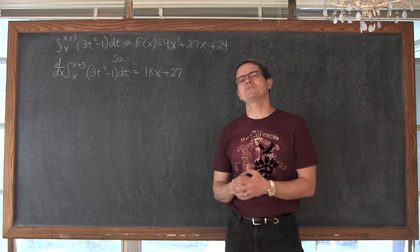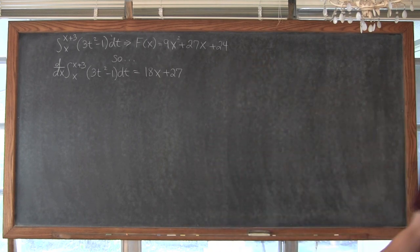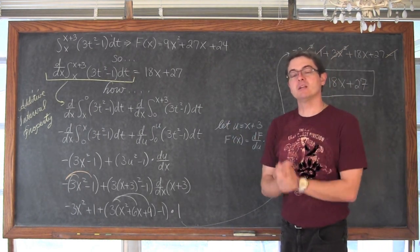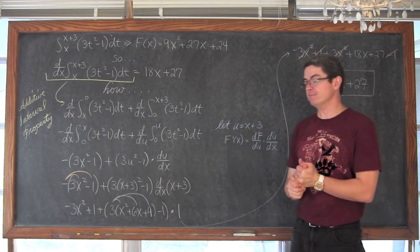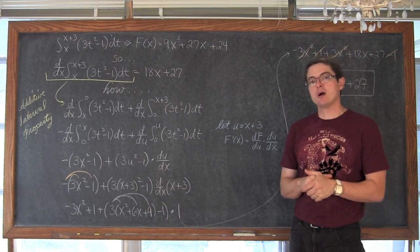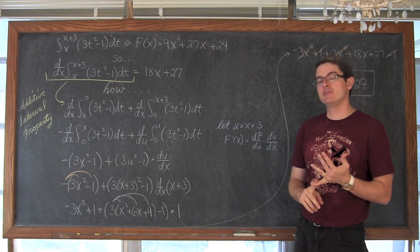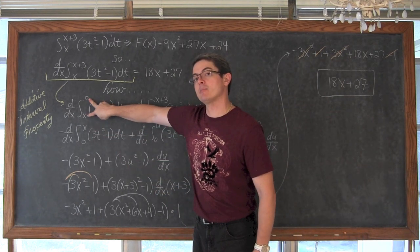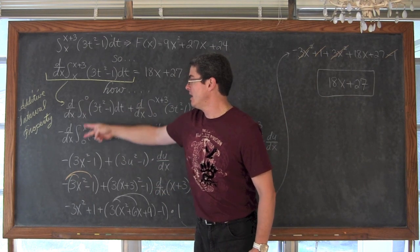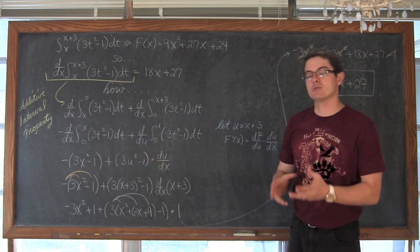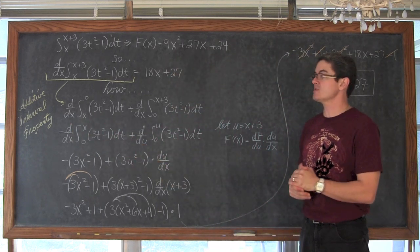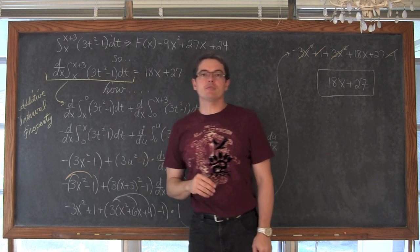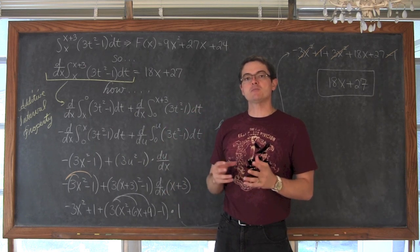Let's just see that example and figure out what we did. We had to use two properties of definite integrals: the additive integral property, and the property where we switch the upper and lower boundary of our definite integral — which gives us an opposite answer — and then finally finish off with the chain rule. For the second fundamental theorem of calculus to work, our lower bound must be a constant.